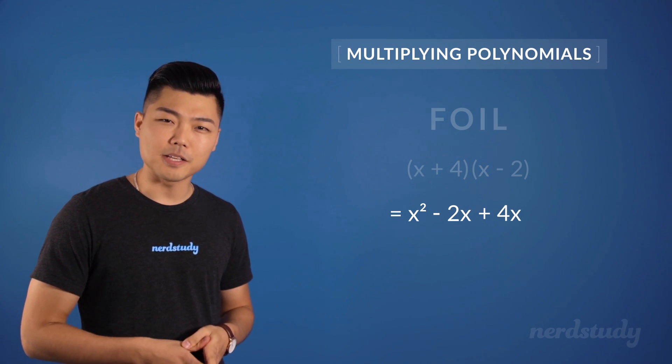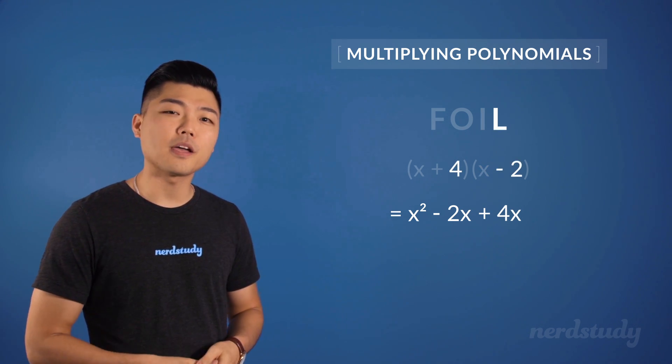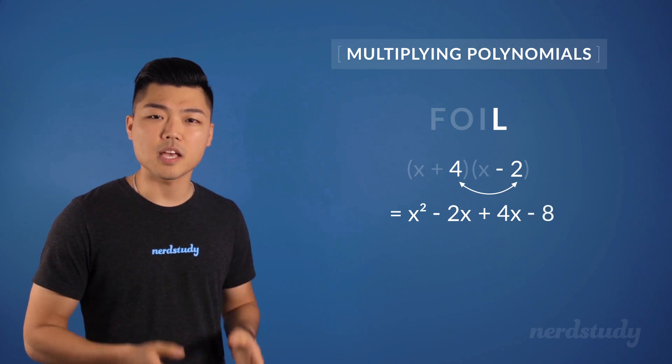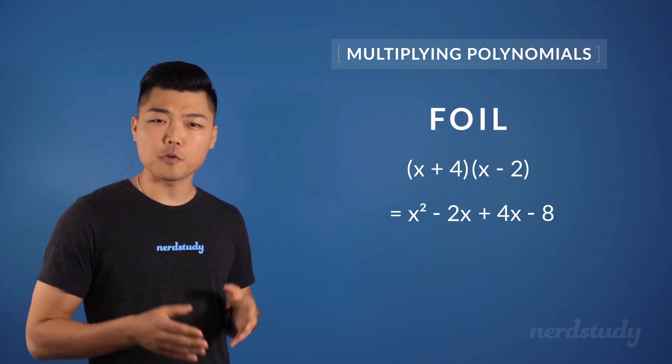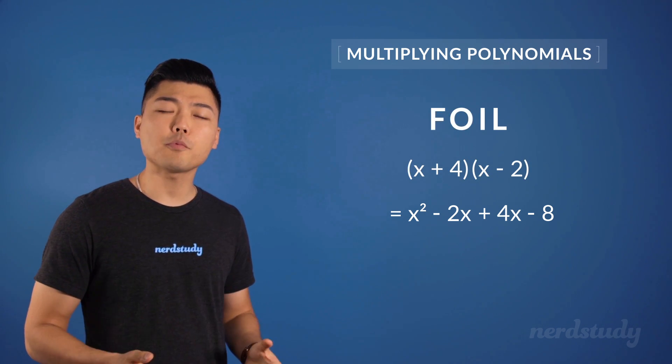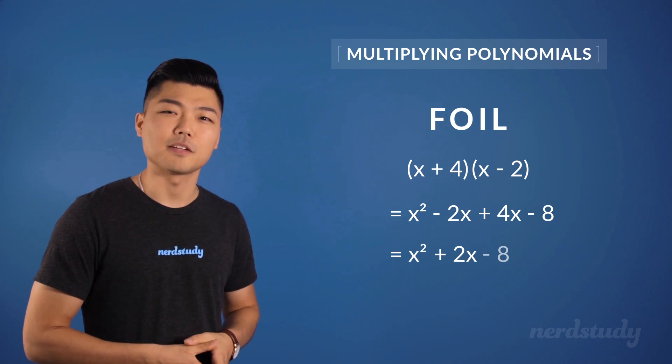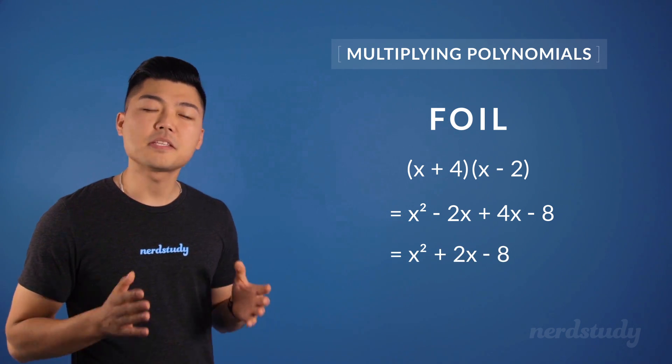And lastly, for L, we multiply the last terms of each binomial which gives us minus 8. So if we simplify this, what we end up with is x squared plus 2x minus 8.